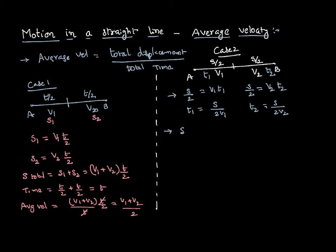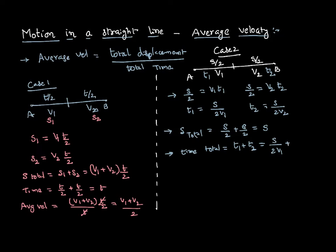Now the total displacement is S/2 plus S/2, which equals S. For total time: T1 plus T2 equals S/(2V1) plus S/(2V2). Adding these gives S times (V2 + V1) divided by (2V1V2).